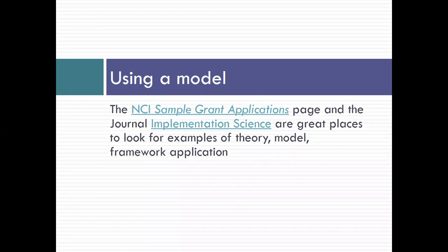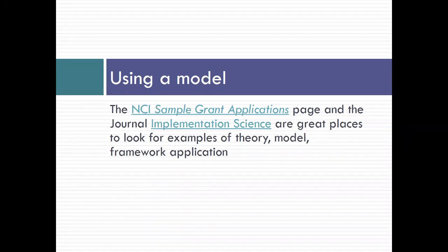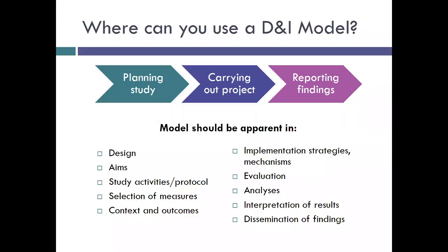So let's move on to some information on using a model in your study. Here are a few links to places you might be able to find examples of past or ongoing studies to see how they've described using models to guide their work — one is a link to grant examples and the other is a journal that publishes a lot of implementation science research, where you can search for a model and identify papers that have included that model. You can use a D&I model throughout your study, but the earliest phase is when you're designing your study, likely when you're developing your grant proposal. It can then be carried through conducting your study and reporting the findings. Models are used to guide research and help researchers interpret their findings and contribute to the science. Your model should be apparent in your design, aims, study activities, selection of measures, evaluation, analyses, and interpretation and dissemination of findings.